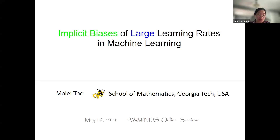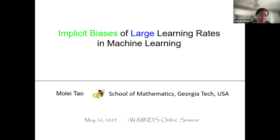Dr. Tao received his PhD degree in computational mathematics from Georgia Tech in 2011. He is currently an associate professor of mathematics at Georgia Tech. Before that, he was a Courant instructor with New York University. He has received several awards — for instance, the 2018 NSF CAREER Award, ICEDAS 2020 Best Paper Award, Cullen-Peck Scholar Award, and GT-Emory Joint AI Community Award.